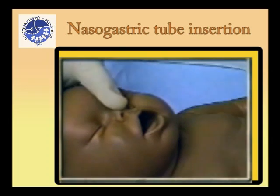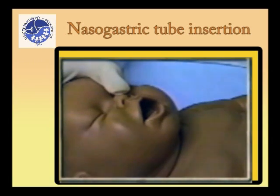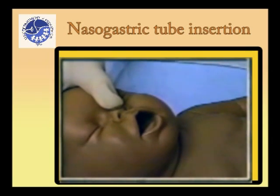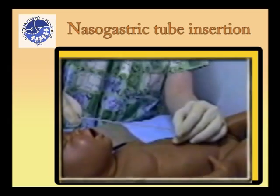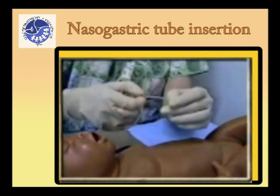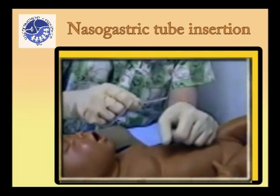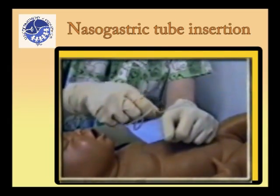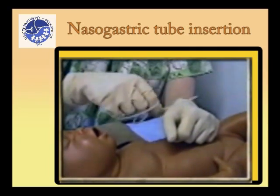Examine the nasal passage and select the largest nostril. Brush the tube about 5 to 8 cm from the terminal tip. When ready for use, dip the tip in water-soluble lubricant.